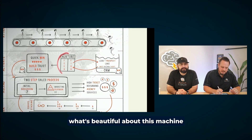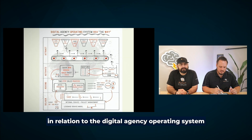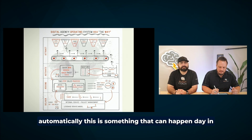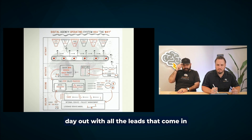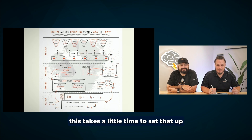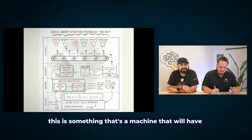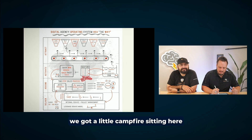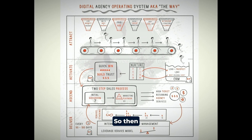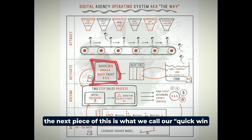The Feed and Fish Infinity Campaign is designed to send content that feeds them and content that makes them offers. What's beautiful about this machine — the digital agency operating system sales machine — is that this can happen automatically, day in and day out, with all the leads that come in without you thinking about it. It takes a little time to set up, but once you have it, this machine will have a little campfire sitting here, warming those folks up and getting them ready to move into the rest of the process.